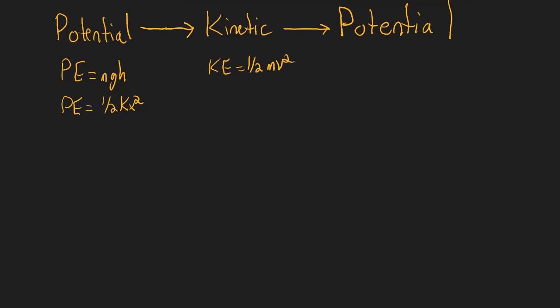Now how do we use these in practice? Let's say we've got a ball on top of a hill. Assuming the ball is stationary and not moving, we know it doesn't have any kinetic energy. So all of its energy is in the form of potential energy.